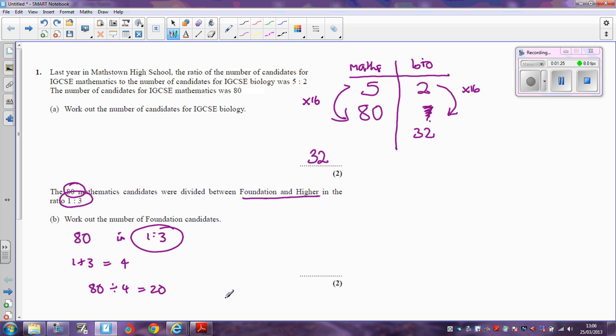So our parts are 20 to 3 lots of 20, which is 60. Make sure you get this the right way around. Foundation to higher is 1 to 3. So that's foundation, that's higher. The number of foundation candidates then is 20.